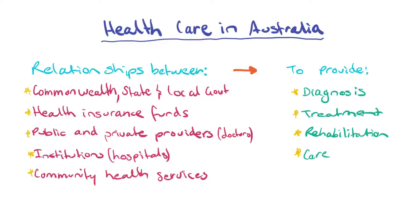When we have a look at health care in Australia, we look at the relationships between the different governments, health insurance funds, public and private providers, doctors, institutions such as hospitals and community health services, and what they actually provide. They aim to provide diagnosis, treatment, rehabilitation and care.